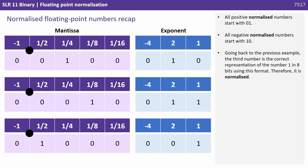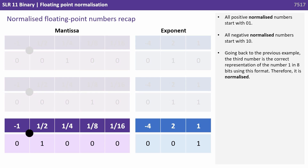All positive normalised numbers start with 01. All negative normalised numbers start with 10. Going back to the previous example, the third number is the correct representation of the number 1 in 8 bits using this format — therefore it is normalised, as it starts 01.